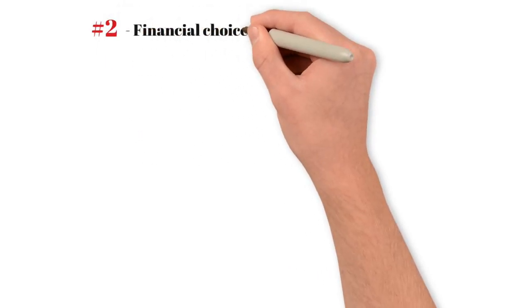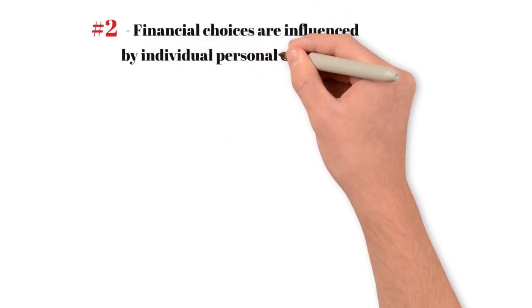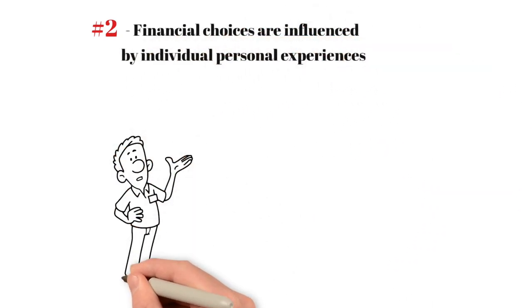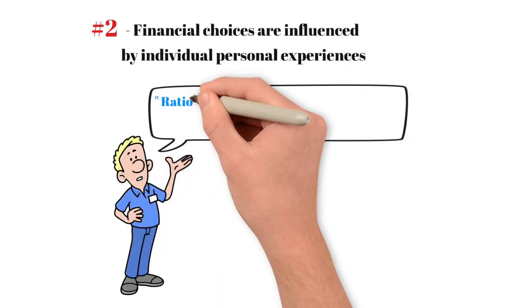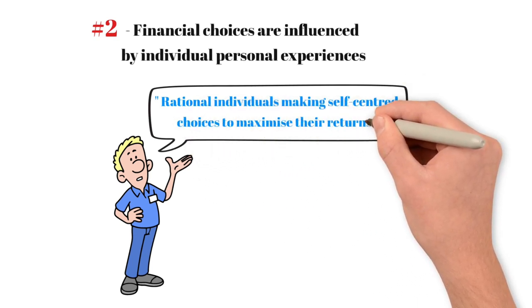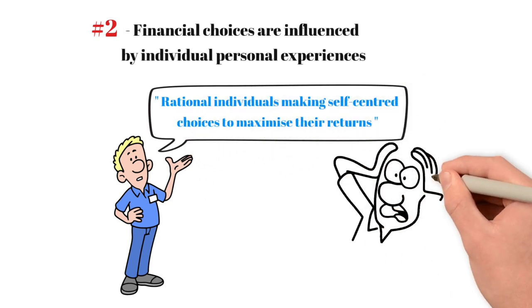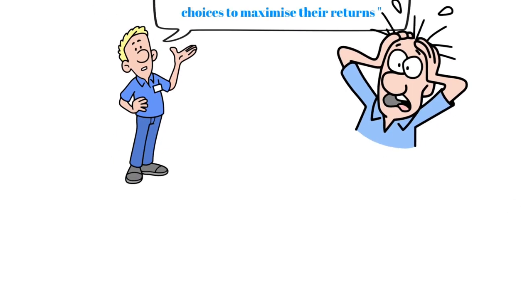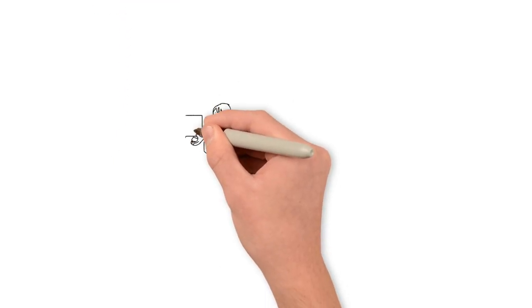Number two: Financial choices are influenced by individual personal experiences. When economists create models for financial behavior, they often use a simplified concept: rational individuals making self-centered choices to maximize their returns. However, in reality, things are a bit more complicated. Consider, for example, the lottery.